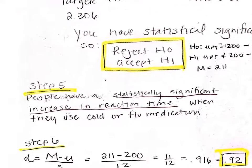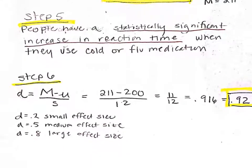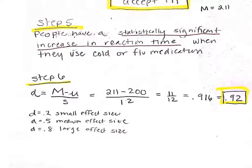For step 5, we put this into words: people have a statistically significant increase in reaction time when they use cold or flu medication. This means the increased reaction time might be dangerous for certain jobs or driving. Remember that we can have a statistically significant result with a small, medium, or large treatment effect — having statistical significance does not necessitate a large effect size.